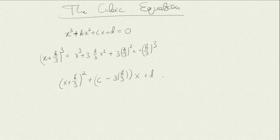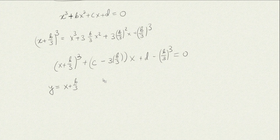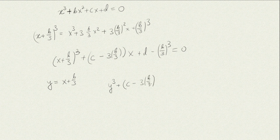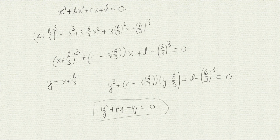This is the same equation, and now if we call y = x + b/3, the equation we obtain for y is y³ + py + q = 0, where p and q are certain coefficients depending on b, c, d. So it suffices to know how to solve an equation of this depressed form, because we can always bring any cubic to this form via this shift substitution.